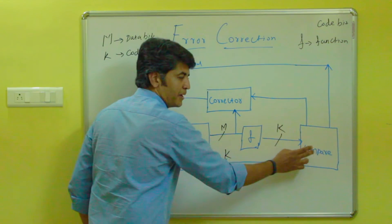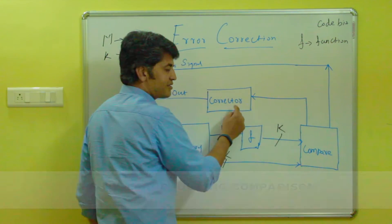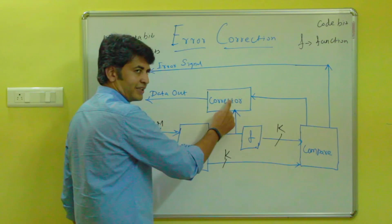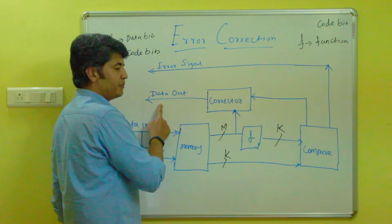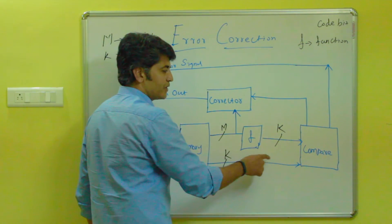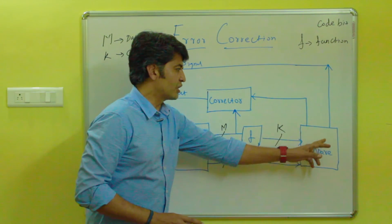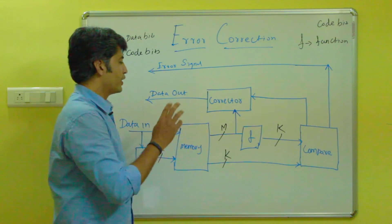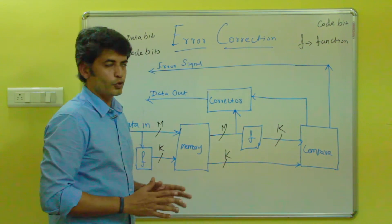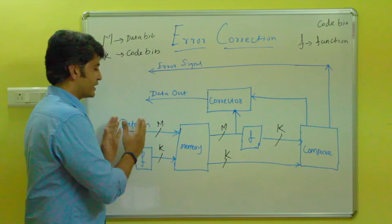During comparison, the code bit generated by the second code function is compared with the first code bit stored in memory. If there is any error detected in the comparison, a signal is sent to the corrector. The corrector collects the data bit, performs correction based on the error, and the corrected data goes out via data out. If the error cannot be corrected, the comparison function generates an error signal indicating the data could not be corrected.